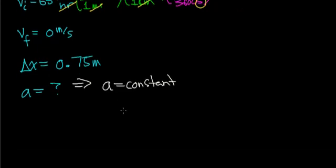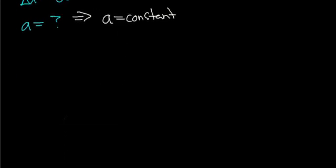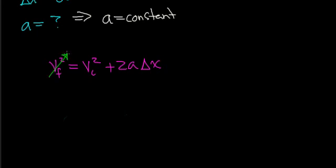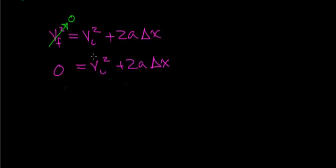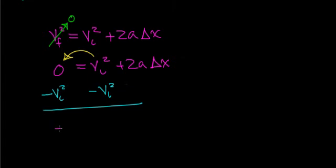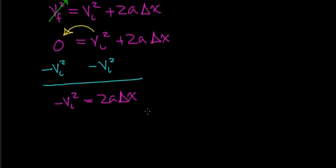To solve this problem, you can use the equation: final velocity squared equals initial velocity squared plus 2 times the acceleration times the distance over which the car begins to slow down. The final velocity of this car is 0, so you have: 0 equals the initial velocity squared plus 2 times the acceleration times the change in distance. The next step is to move the initial velocity squared term to the other side by subtracting it from both sides, giving: minus v-initial squared equals 2 times the acceleration times the change in distance.